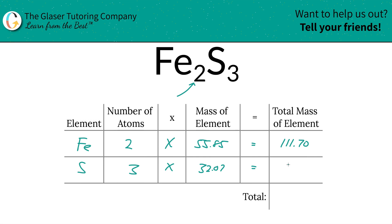And then for sulfur here, it's going to be 96.21. So then to find the total mass of the entire compound, which is what we're interested in here, it's going to be 207.91. Since we're solving for molar mass, the units here are in grams per mole.